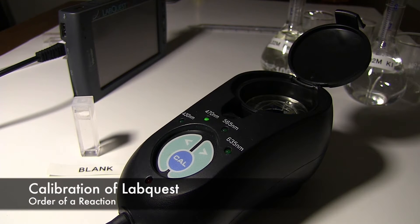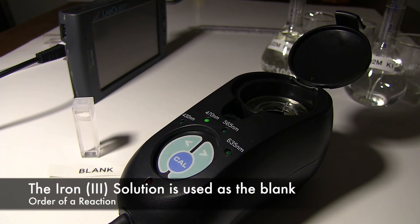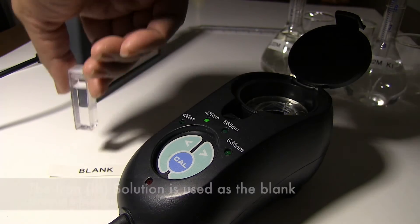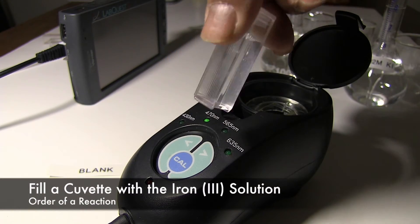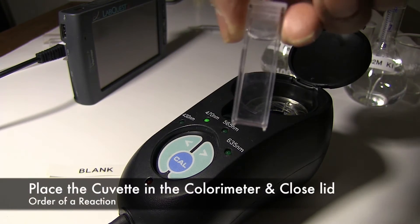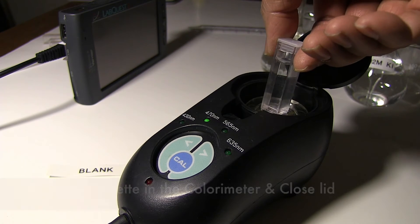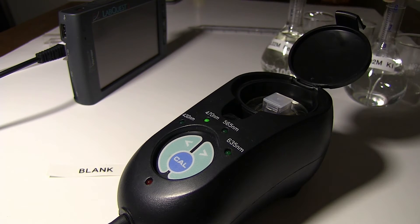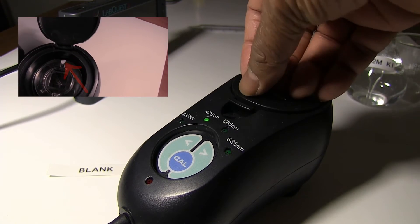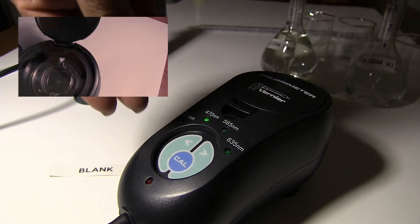To calibrate, we will use the 0.02 molar iron 3 solution as the blank. Fill the cuvette 3/4 with the iron 3 solution, close the cuvette, place it in the colorimeter such that the clear side of the cuvette faces the white triangle on the colorimeter.